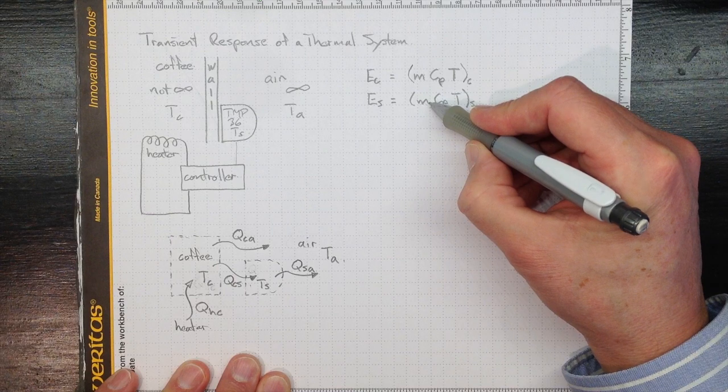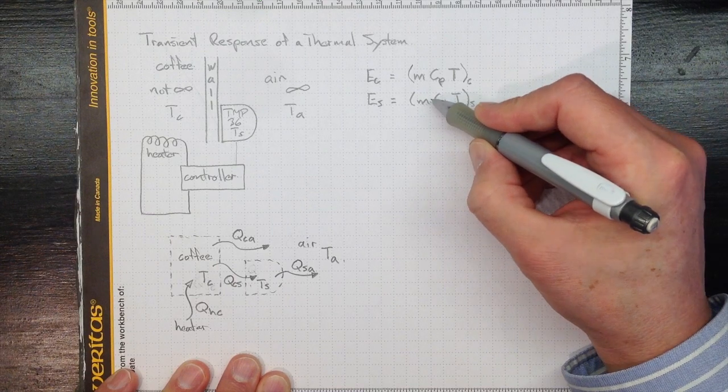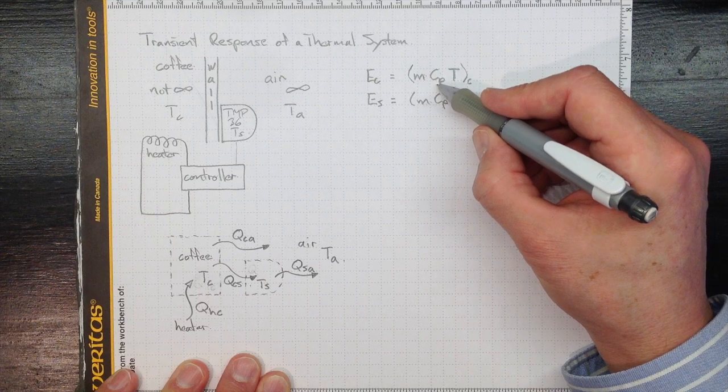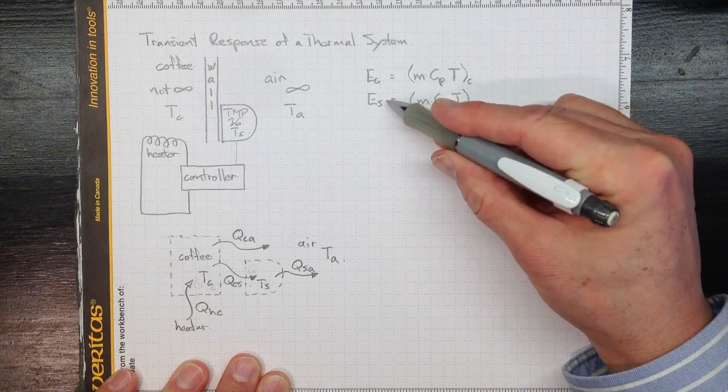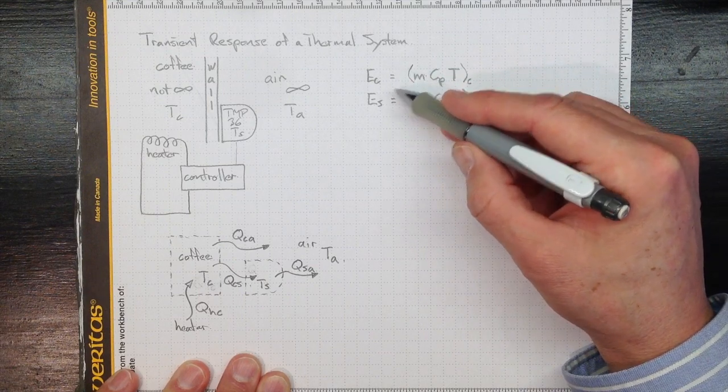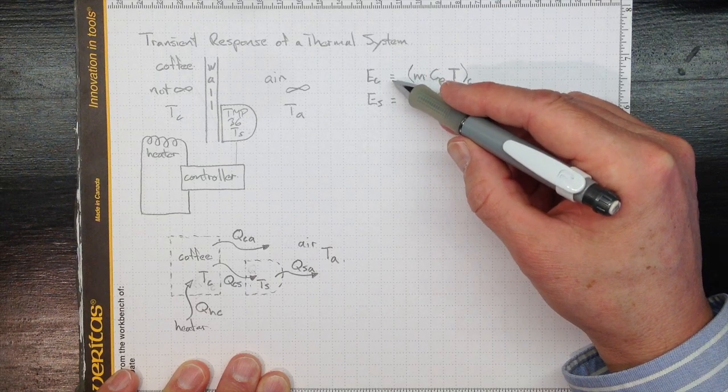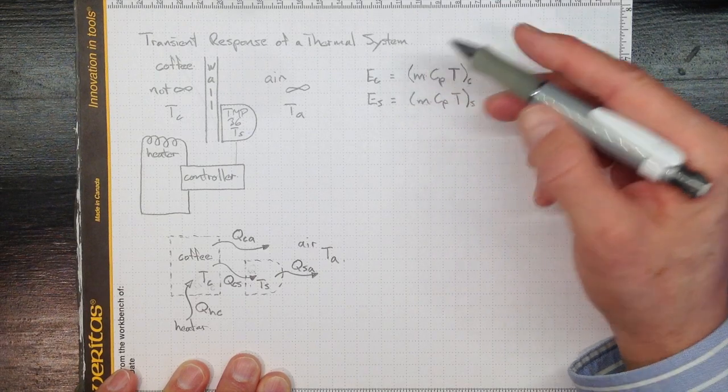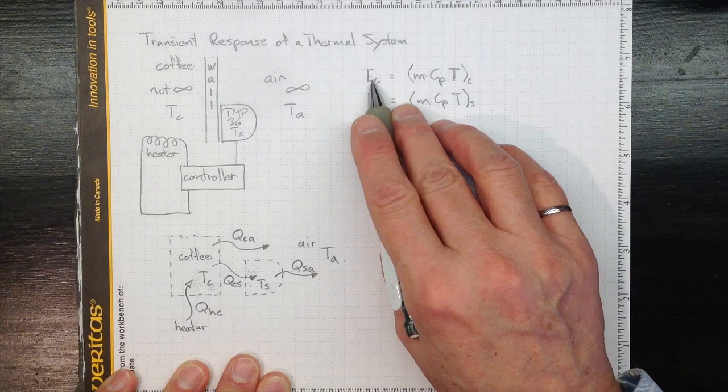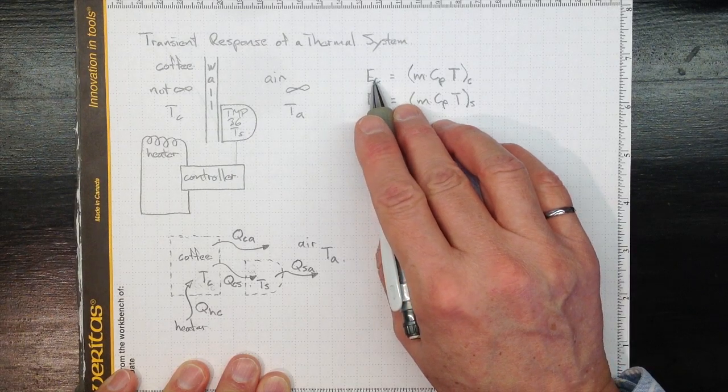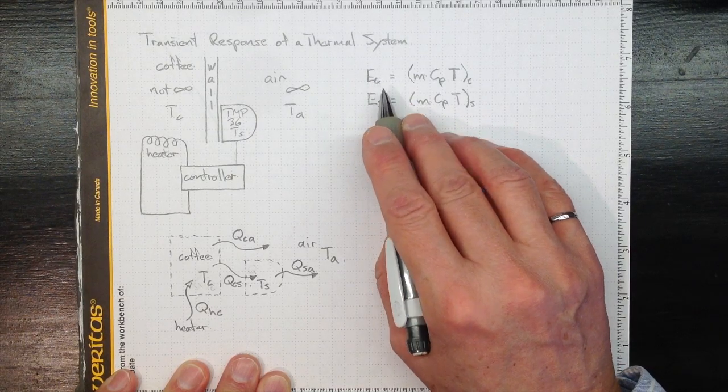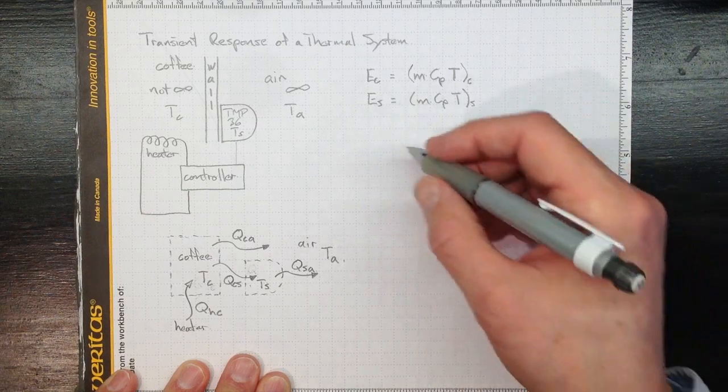So I expect that the energy contained in the sensor is going to be way smaller than the energy contained in the coffee, and I expect the sensor is going to respond more quickly than the coffee to our transient response. So let's look at how would the energy in the coffee or the energy in the sensor change with time. Let's look at the sensor.